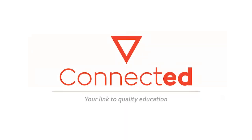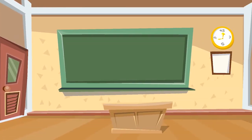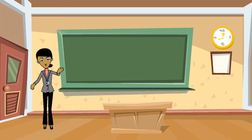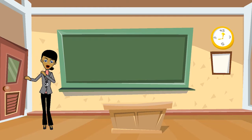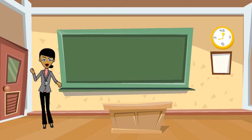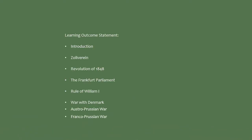Hello class, welcome to Connected. In this video we will learn the story of the unification of Germany. We will discuss the Zollverein, the revolution of 1848, the Frankfurt Parliament, the rule of William I, Germany's war with Denmark, the Austro-Prussian War, and finally the Franco-Prussian War.